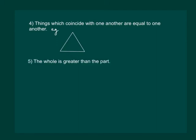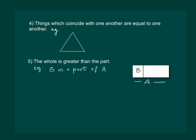Next Axiom says the whole is greater than the part. This would mean if B is a part of A, then A will always be greater than B, and A can be written as sum of B and some third quantity C.